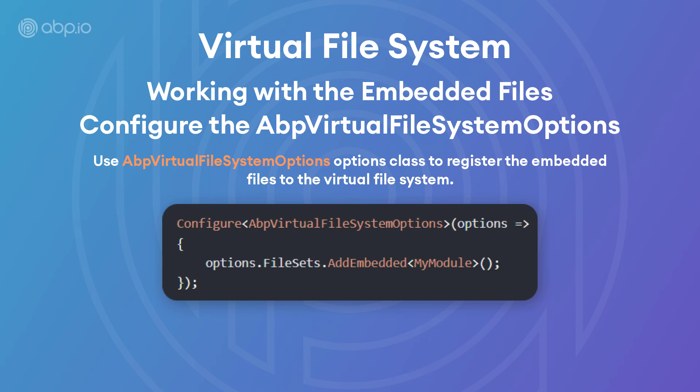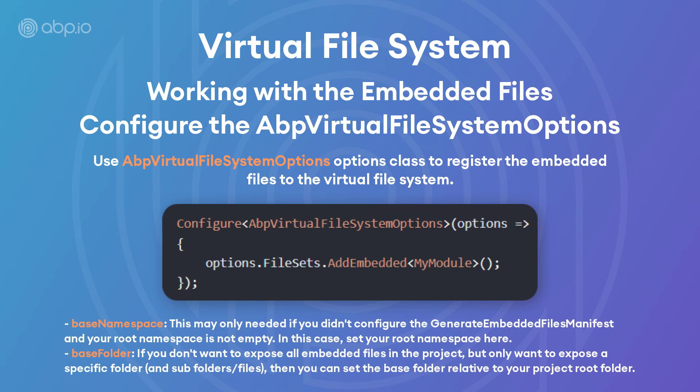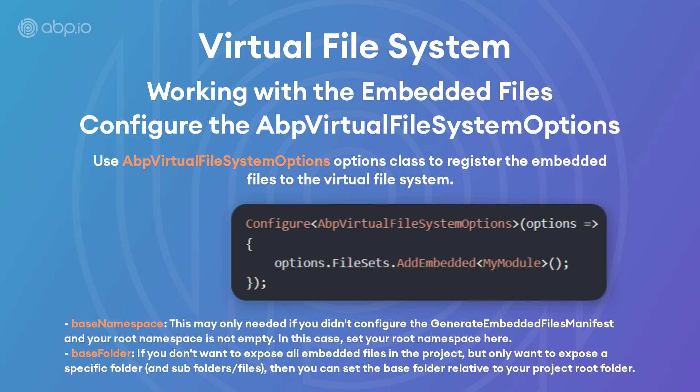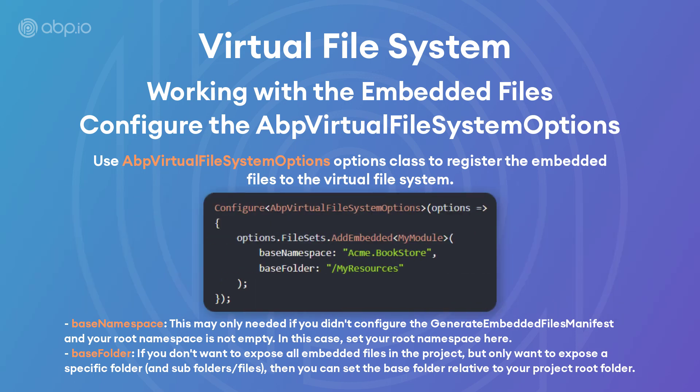The addEmbeddedExtension method takes a class, finds all the embedded files from the assembly of the given class, and registers them to the virtual file system. It takes two optional parameters: baseNamespace and baseFolder. For instance, this example assumes that the root namespace of your project is acme.bookstore, your project has a folder named MyResources, and you only want to add the MyResources folder to the virtual file system.